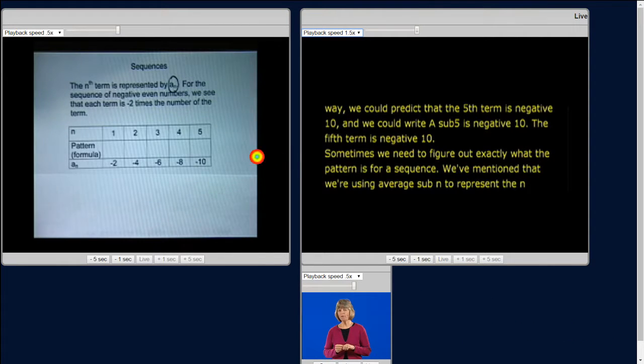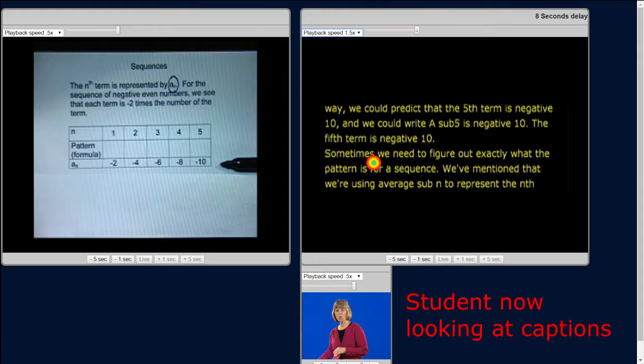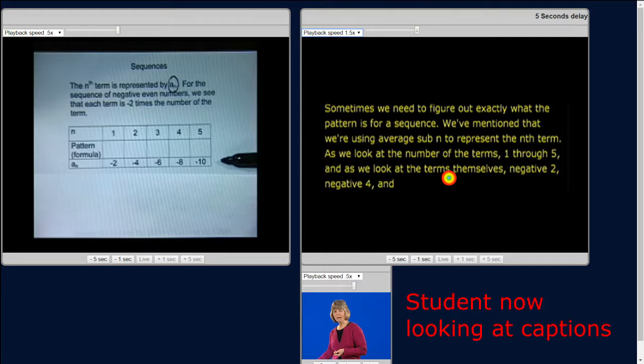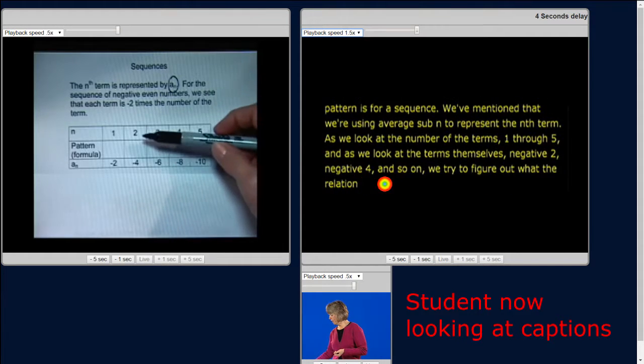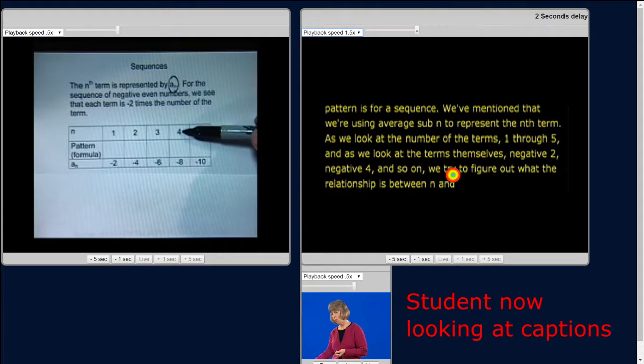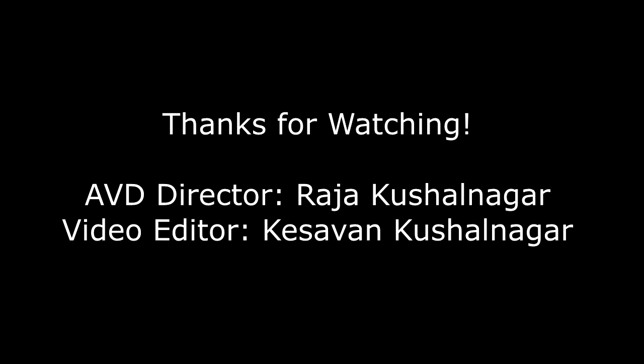As we look at the number of the terms, one through five, and as we look at the terms themselves, negative 2, negative 4, and so on, we try to figure out what the relationship is between n and a sub n. Well, if we look at 2, negative 4, 3, negative 6, 4, negative 8, it looks like the nth term is negative 2 times n.